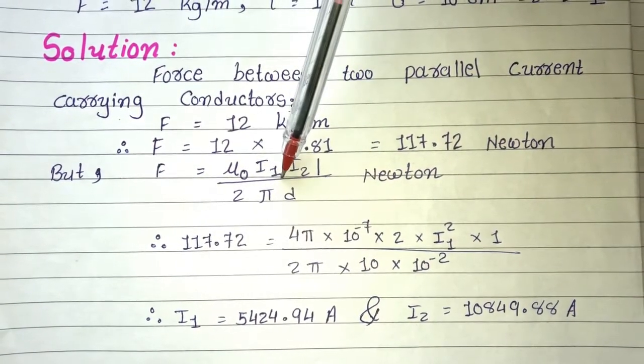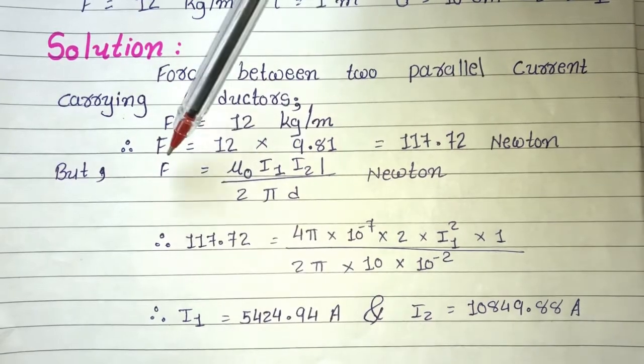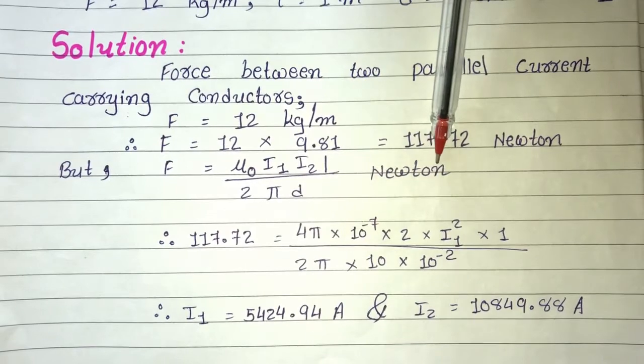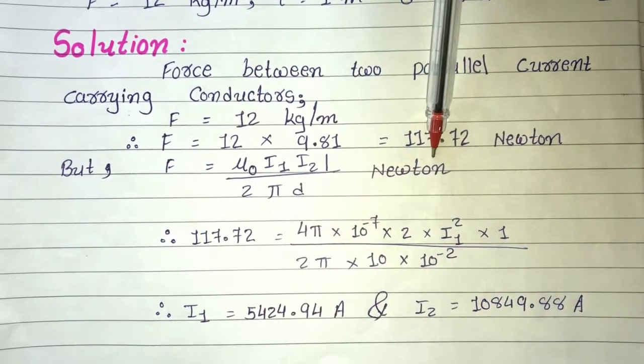Now the final equation of force, you have to put it here. So, F is equal to mu 0, I1, I2, L, divide by 2 pi D, Newton. So force unit will be Newton.